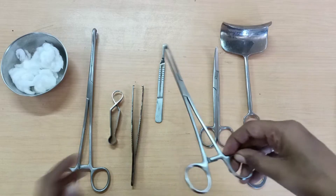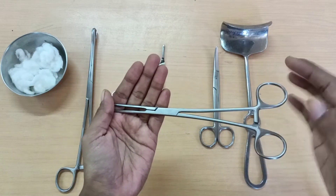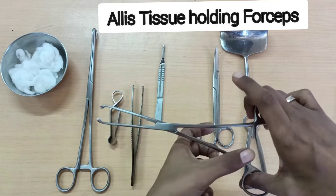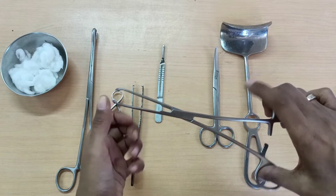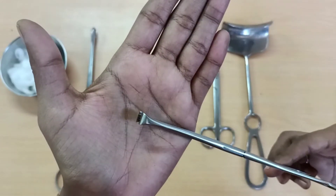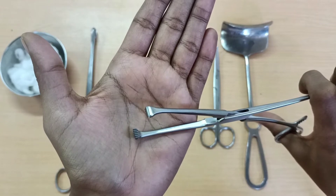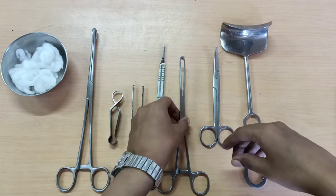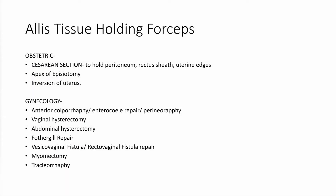When you come to the rectus sheath, you are going to require Alice tissue holding forceps. It has multiple rat teeth over its working end — you can see there are multiple teeth. It is used for holding tough tissue structures such as the rectus sheath. Other uses include: in caesarean section, holding the peritoneum, the uterine edges, or the apex of the episiotomy; inversion of uterus; and various gynaecological procedures.